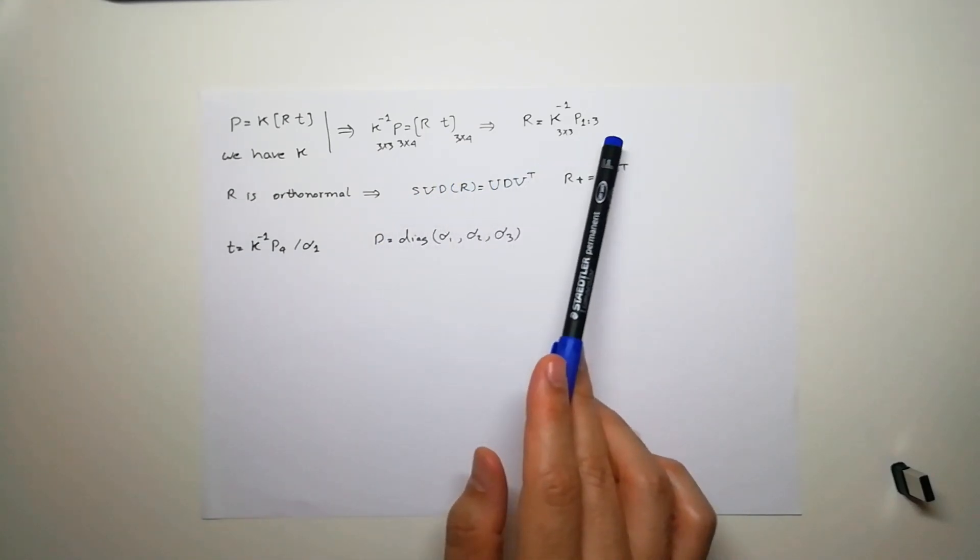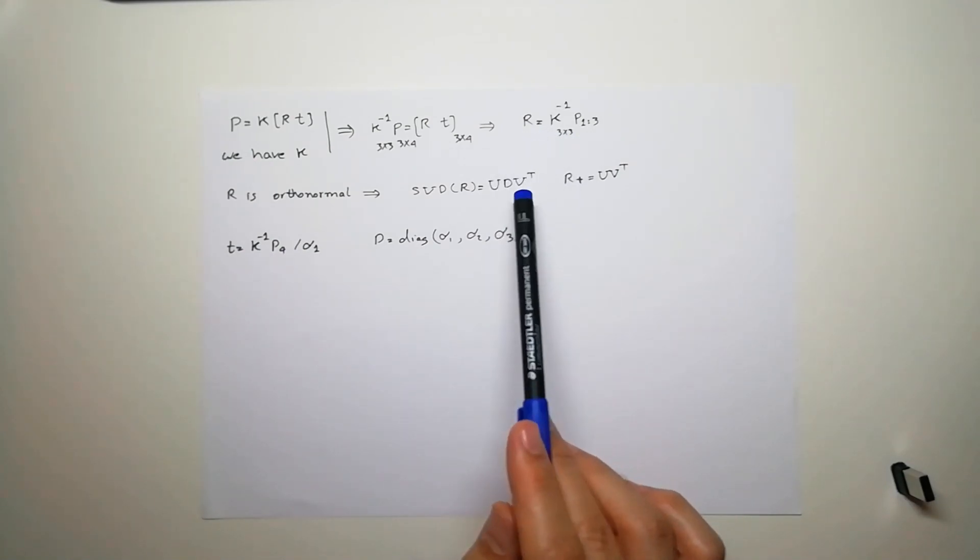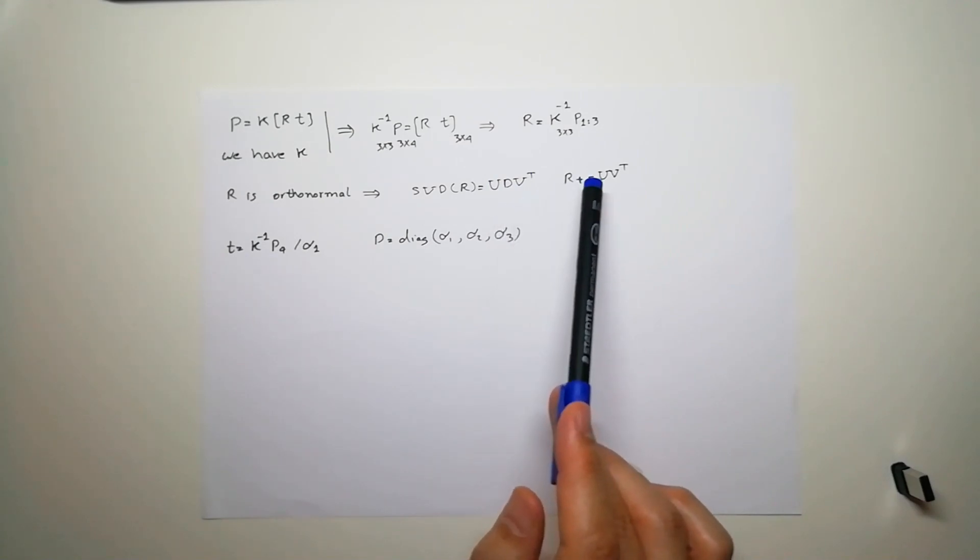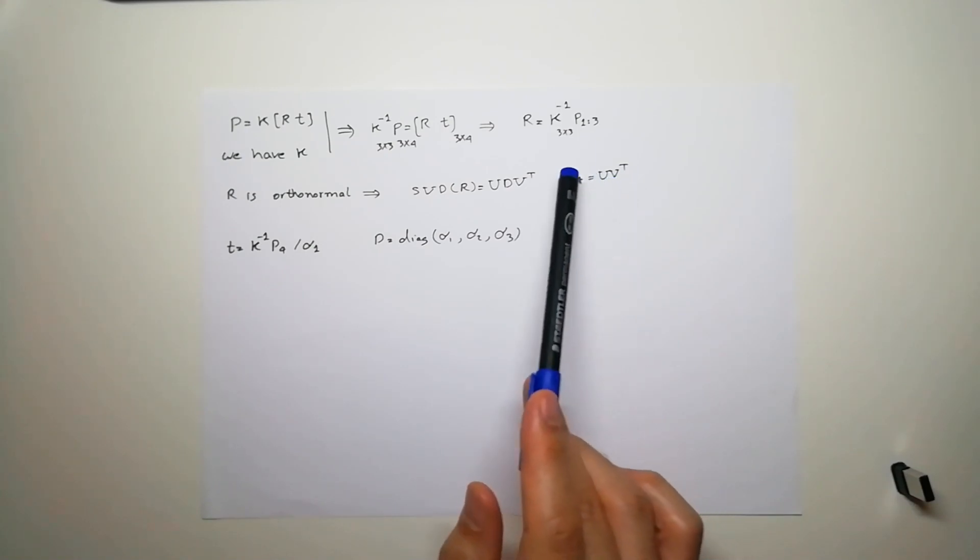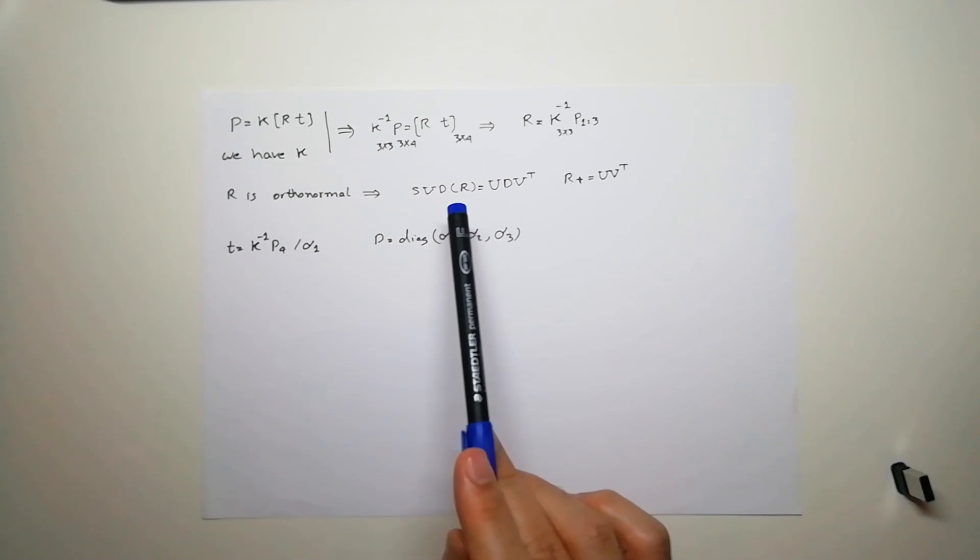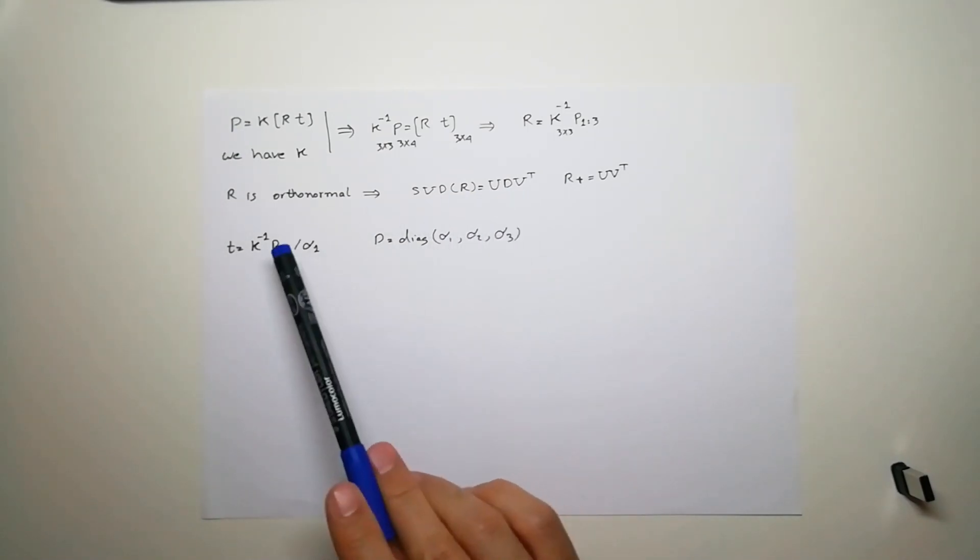We divide it by the diagonal matrix. So our new rotation matrix is U V transpose. Both of them are unitary matrices, so the product is unitary and it's a valid rotation matrix now. Because we have done this here, we have to also do this for the translation.